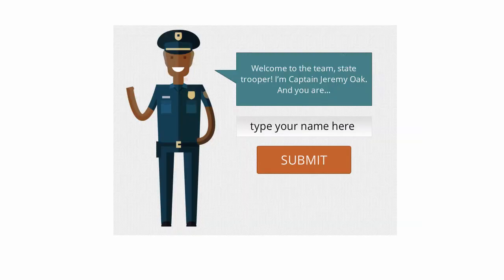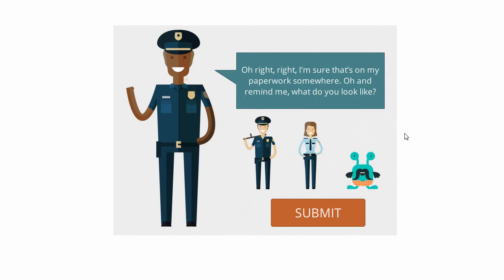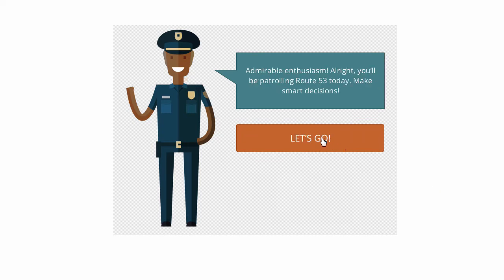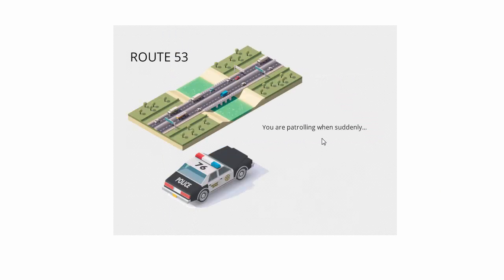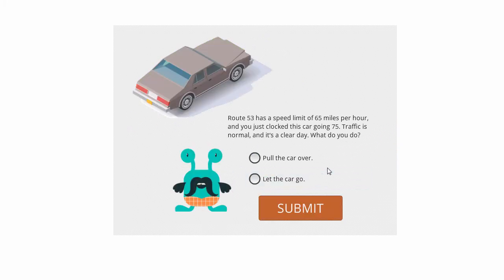Next up is Rachel Barnum's example — a cool example for first day on the job. You enter your name to personalize it, and you get to pick your avatar. You're given a series of scenarios and put into a situation as a new police officer where you need to make choices based on the situation you're placed in. Another good example of branching scenarios in eLearning. Love the graphics in this one too — really nicely done.